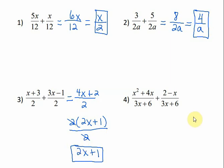In number 4, same thing. Our denominator stays the same, and we just add our numerators. So I would have 3x plus 6 in the denominator, and in the numerator, I combine like terms. x squared, there's not another x squared, so I just bring it down. 4x plus a negative x would be 3x, and then plus 2.